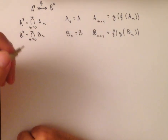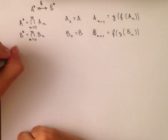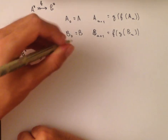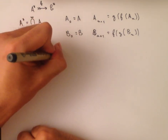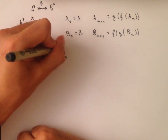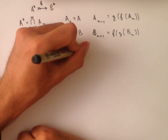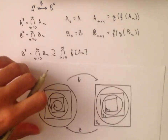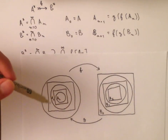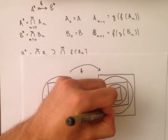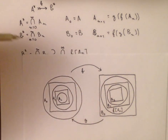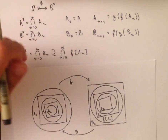The first thing we're going to see is that B*, which is the intersection as n equals 0 to infinity of the B_n's, contains the intersection as n goes from 0 to infinity of F of A_n. Why is this? Let's look at the picture again. F of A_n — for A_0, it's this smaller circle here, so this is F of A_0, and we see that it's contained in B_0. For each n, F of A_n is contained in B_n, and so in the intersection this holds as well.